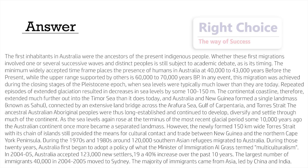During the 1970s and 1980s, around 120,000 Southern Asian refugees migrated to Australia. During those 20 years, Australia first began to adopt a policy of what the Minister of Immigration Al Grass termed multiculturalism. In 2004-05, Australia accepted 123,000 new settlers, a 40% increase over the past 10 years. The largest number of immigrants — 40,000 in 2004-2005 — moved to Sydney. The majority of immigrants came from Asia, led by China and India.